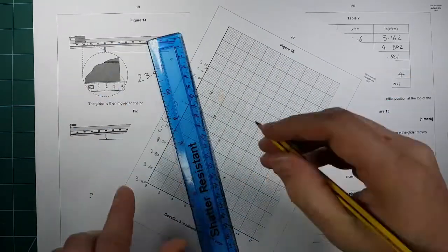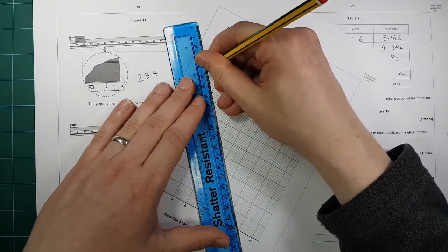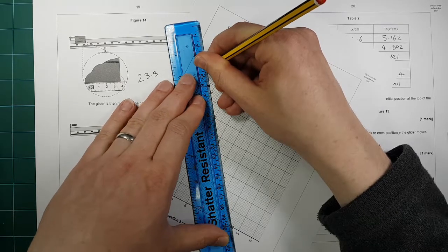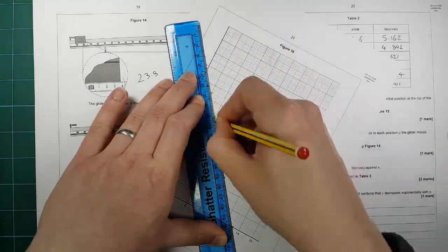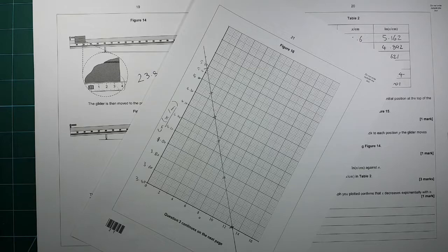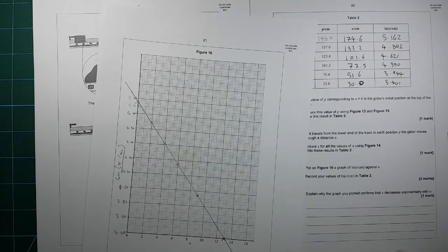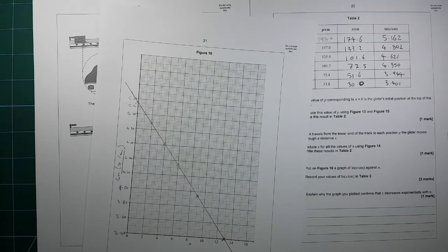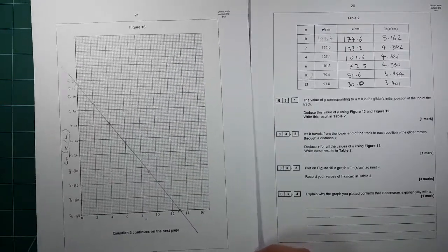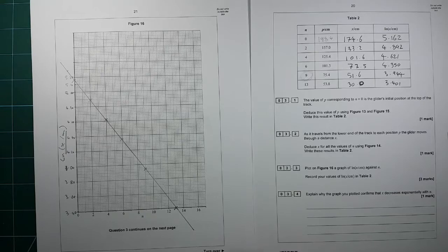Then we need a best fit line, and they should, from my practice run anyway, form a perfect straight line, which they do. Pretty much drill the straight line through every single point. So that is our graph.